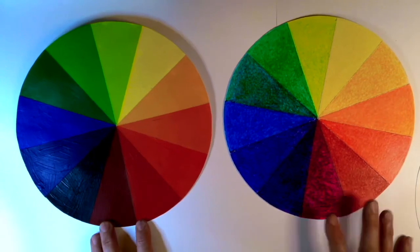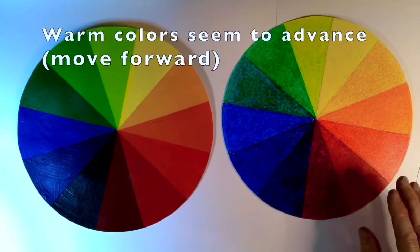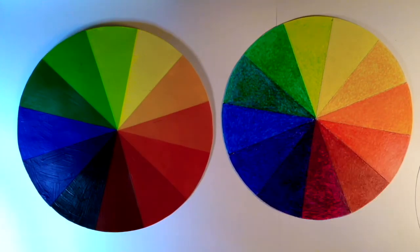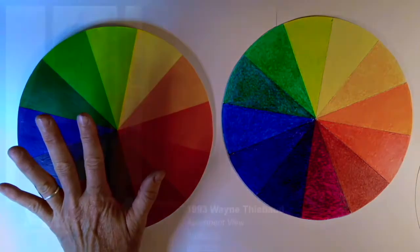The other aspect of that warm cool relationship is that warm colors seem to ascend or to pop forward and cool colors seem to recede into the background.